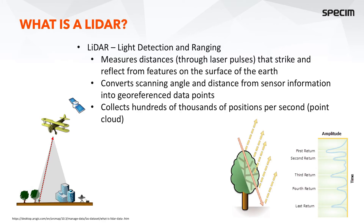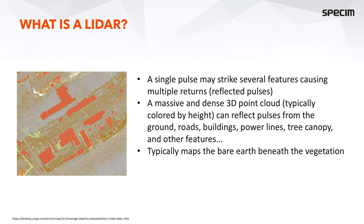So what is LiDAR? This is a simplified illustration of the technology. LiDAR means Light Detection and Ranging. The device uses laser pulses to measure distances by emitting pulses that strike and reflect from features on the surface of the earth. It converts the scanning angle and distance-from-sensor information into georeferenced data points, collecting typically hundreds of thousands of positions per second into something called a point cloud. A single pulse may strike several features, causing multiple returns, which are reflected pulses.